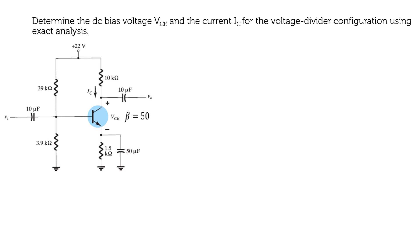Determine the DC bias voltage Vce and the current Ic for the voltage divider configuration using the exact analysis. Looking at the figure, it is the same problem solved earlier, but the only difference is that instead of beta equal to 100 in the previous problem, the beta value has now been changed to 50. Please go through the previous problem, but we will repeat the same calculation again.